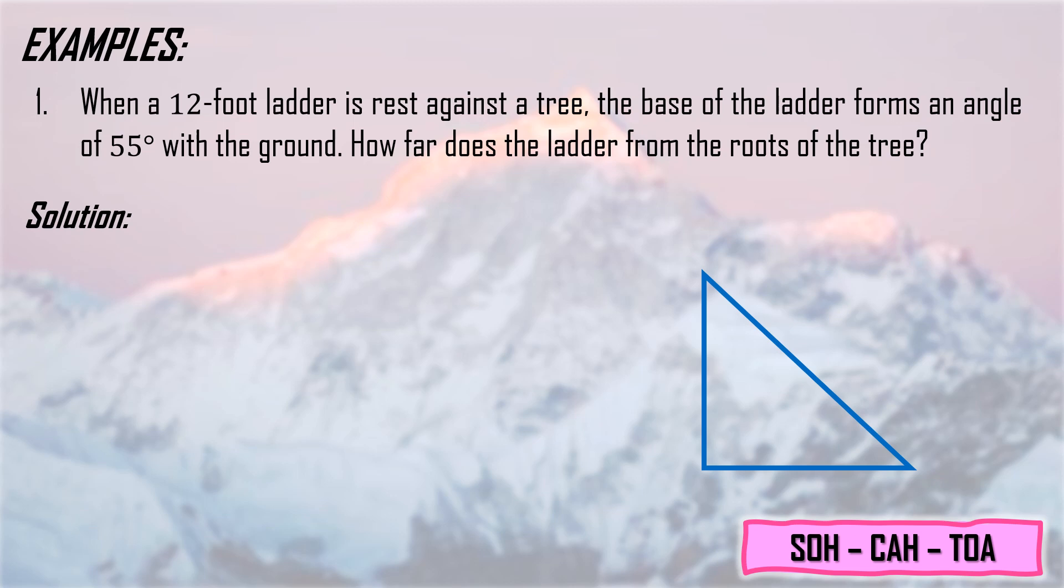We represent the ladder as capital letter L. It leans against the tree. We represent the height as letter T. And this is the base or roots of the tree. The 12-foot ladder leans against the tree, meaning the length of the ladder is 12 feet. So we place the 12 feet here.